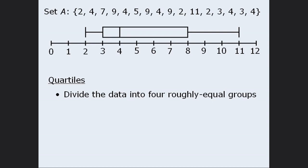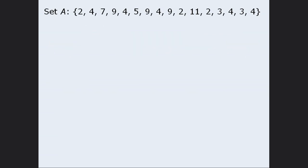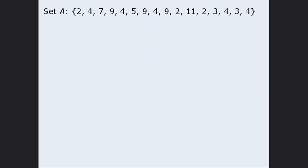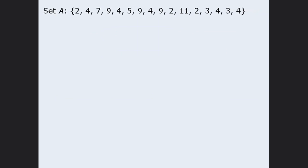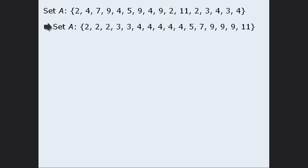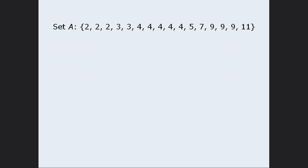Now that we have a rough idea of where we're going, let's see how we can take these numbers and represent them in the form of a box plot. The first step is to rearrange the values in ascending order. The next step is to find the median, so we'll need to find the middle term.